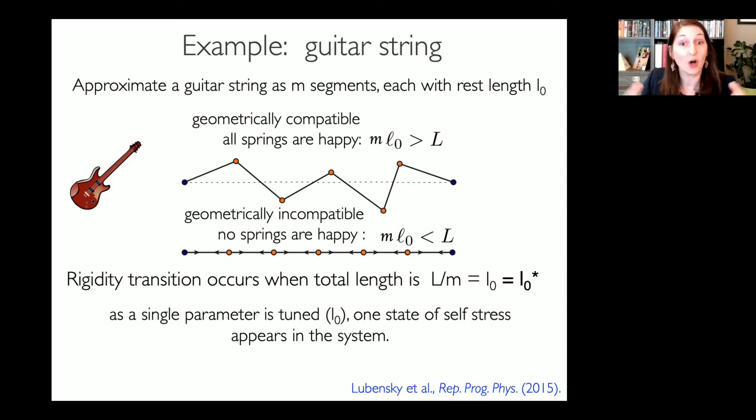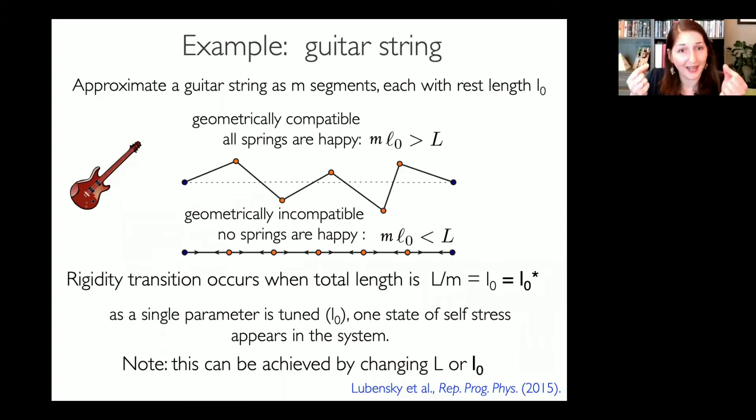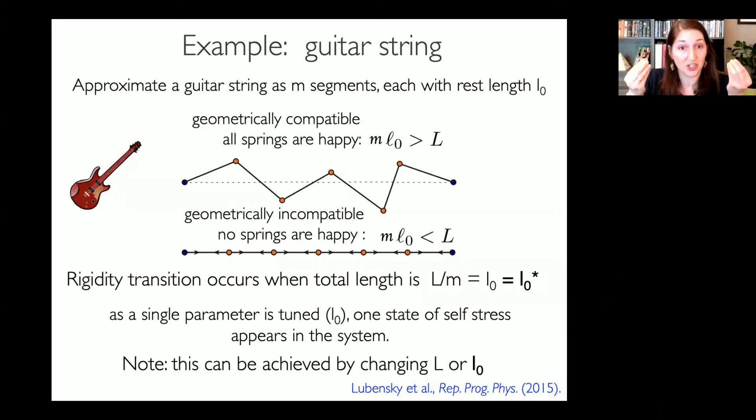Just to note: I've been talking about changing the global end-point separation L, but it's totally equivalent to talk about changing the rest lengths and fixing capital L. Those two things are exactly equivalent — I can either change the rest lengths of the springs or change L.